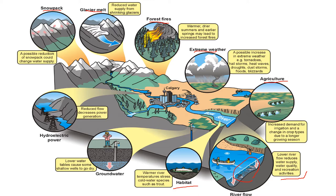Trout like colder water and they have spent millions of years evolving to certain conditions. If we change those conditions very quickly, they won't be able to adapt fast enough. Lower levels of groundwater are also a concern. If you dig a hole at the beach, it fills with water — that's the water table. In instances of lots of drought and heat, the water table lowers, making it more difficult to access water sitting in the ground.